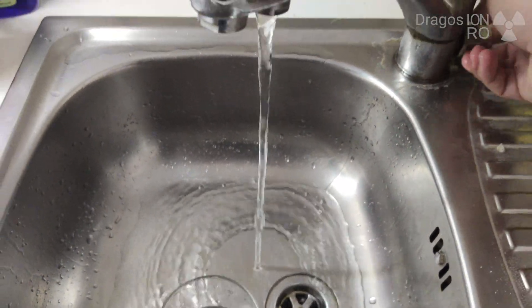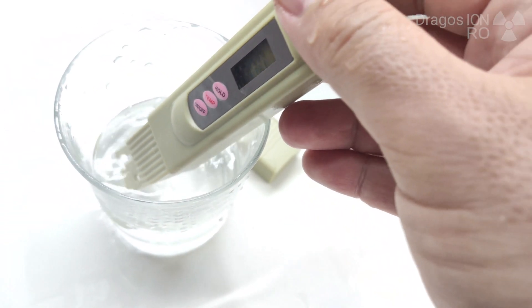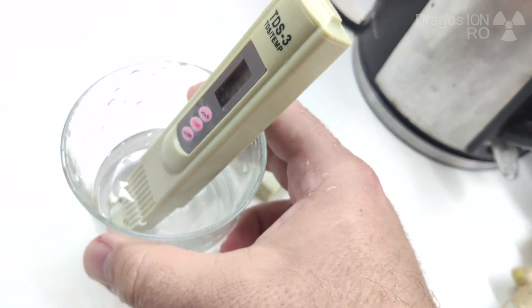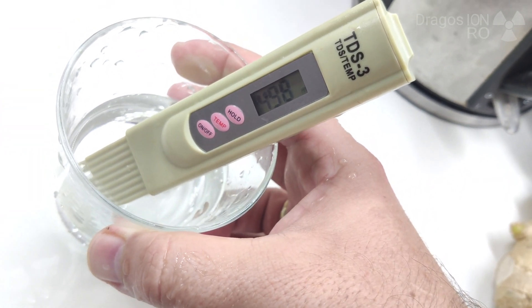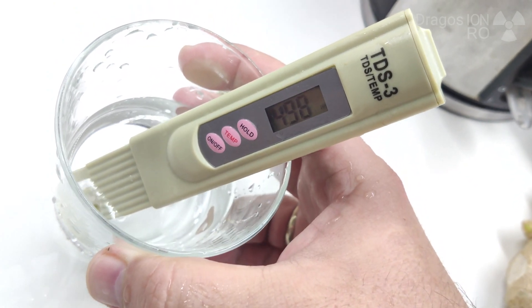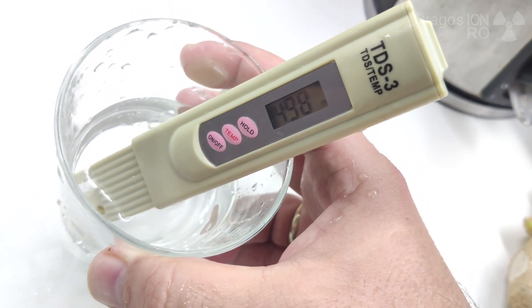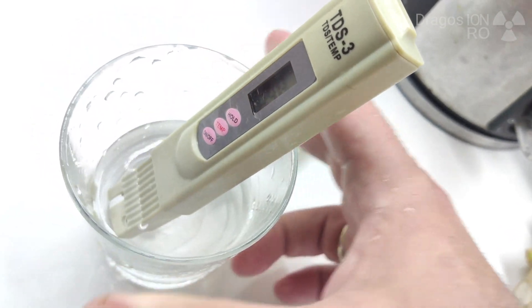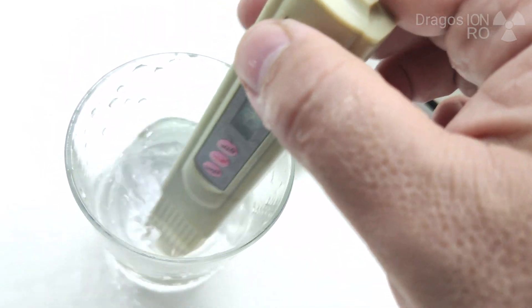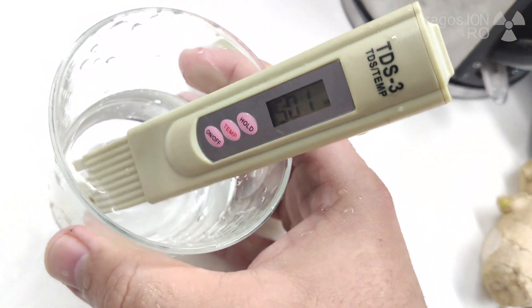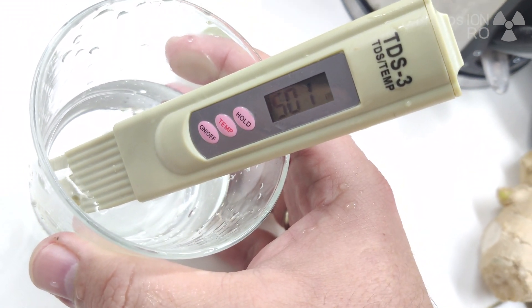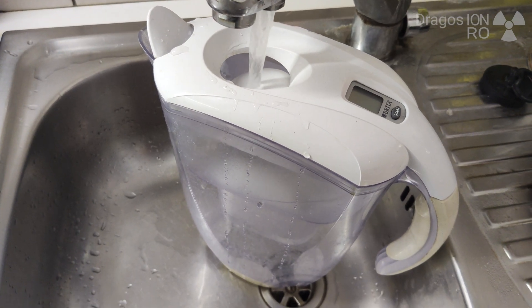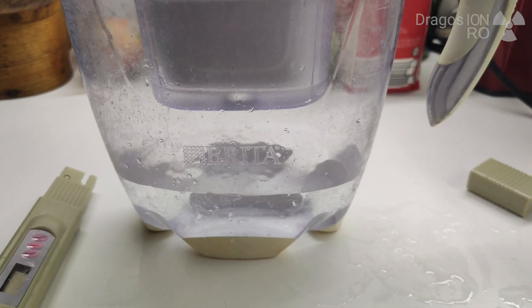It depends on the area where you live. In some places there might be less minerals, in some places more. A high TDS value or PPM value doesn't really mean that the water is bad, it just means more minerals are dissolved in the water, so it might be a good thing actually. If you really want to make a really extensive test, you have to test for heavy metals and bad contaminants.